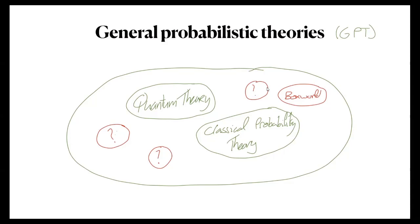This is obviously not an exhaustive picture — there are some other examples of GPTs. But to my mind, there are not that many that we know of, and some of them, like real vector space quantum theory, are somehow very close to or can be embedded in quantum theory itself.